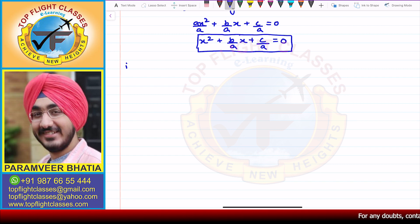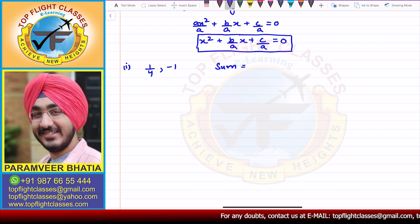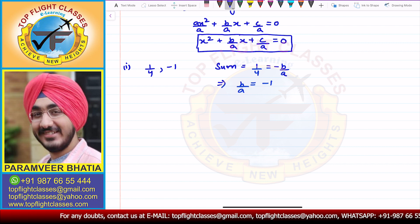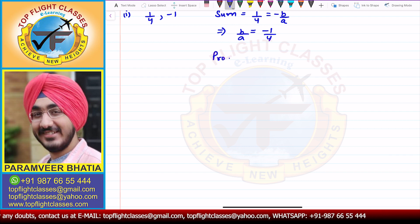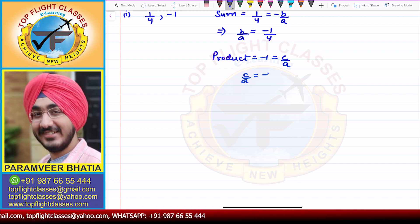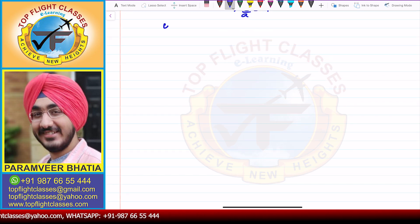The first part gives us (1/4, -1). So the sum is 1/4, which equals -b/a, implying b/a = -1/4. The product is -1, which equals c/a, so c/a = -1.